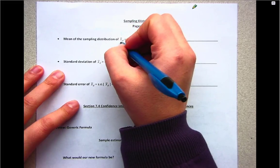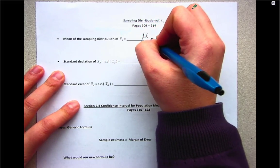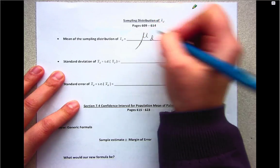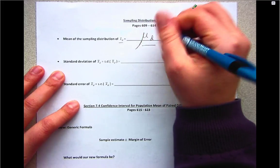So the mean of the sampling distribution of X bar sub d - well in the past when we just had X bar, the center or the mean was mu. Now because we have X bar sub d, the center or the mean is going to be mu sub d.